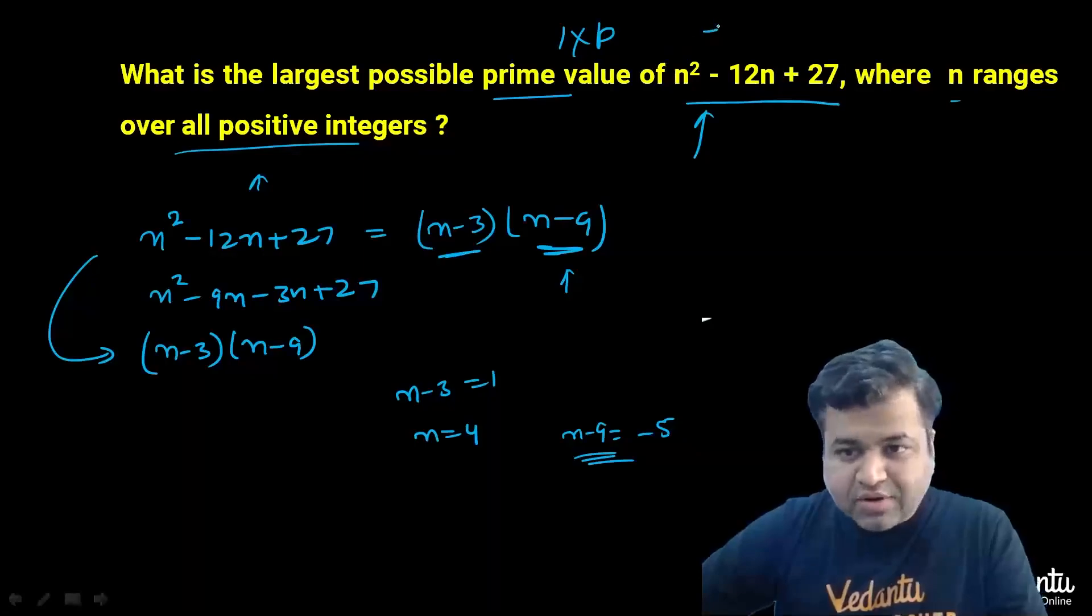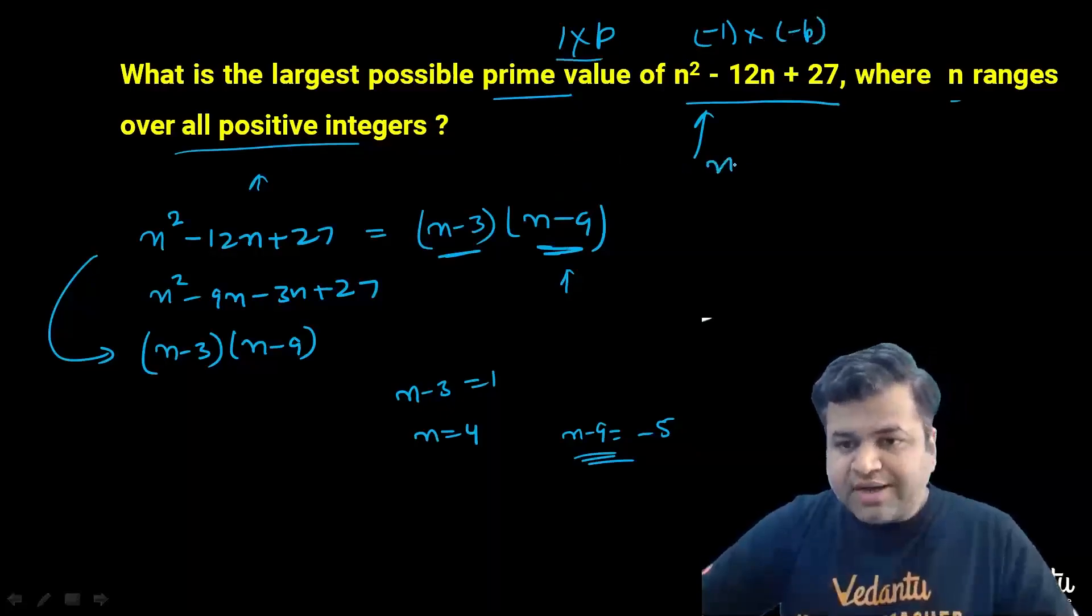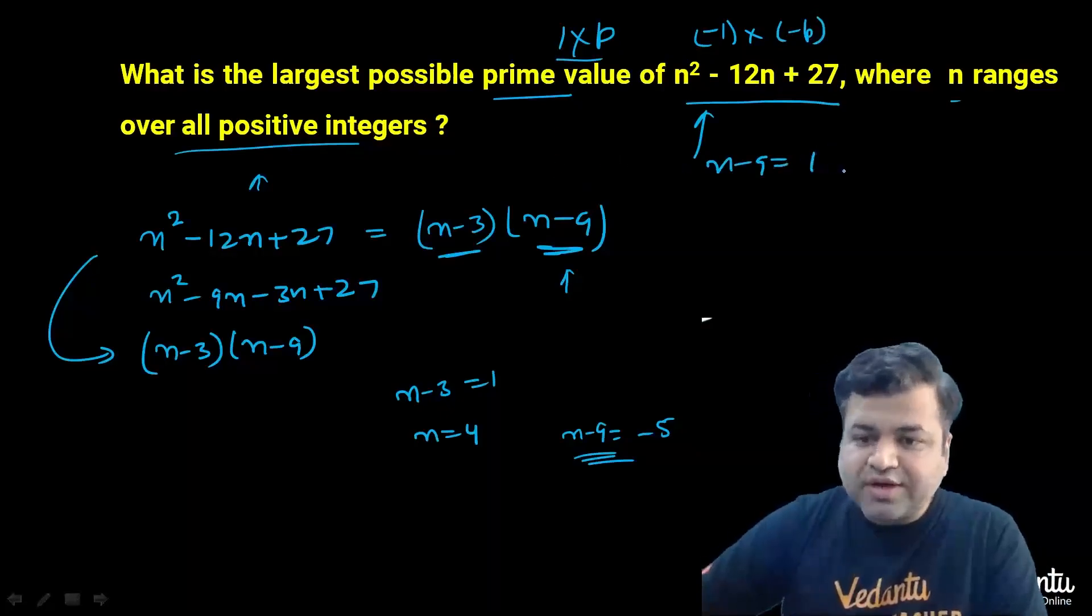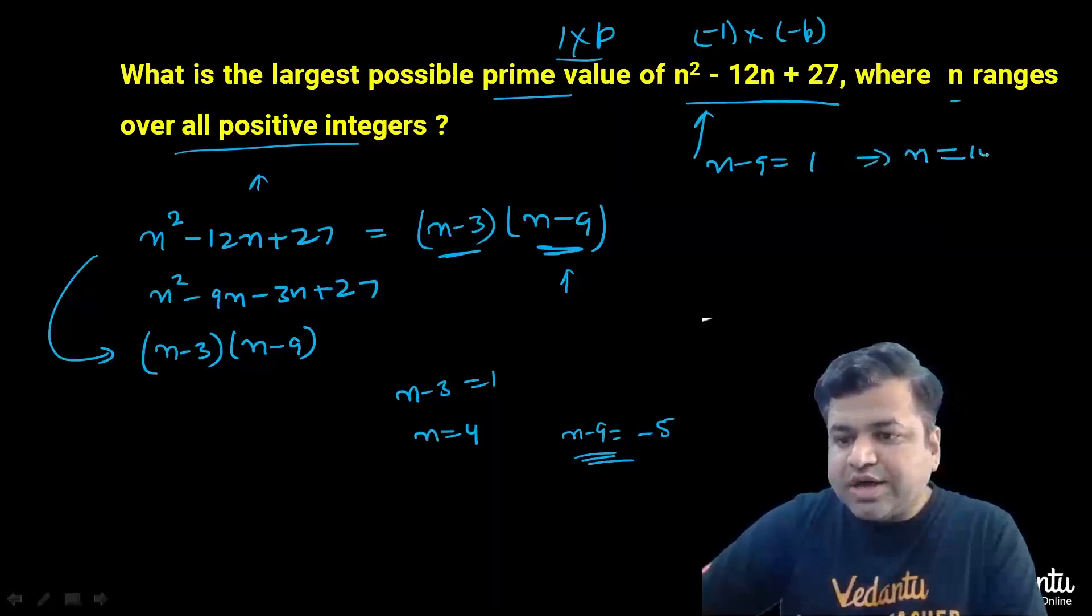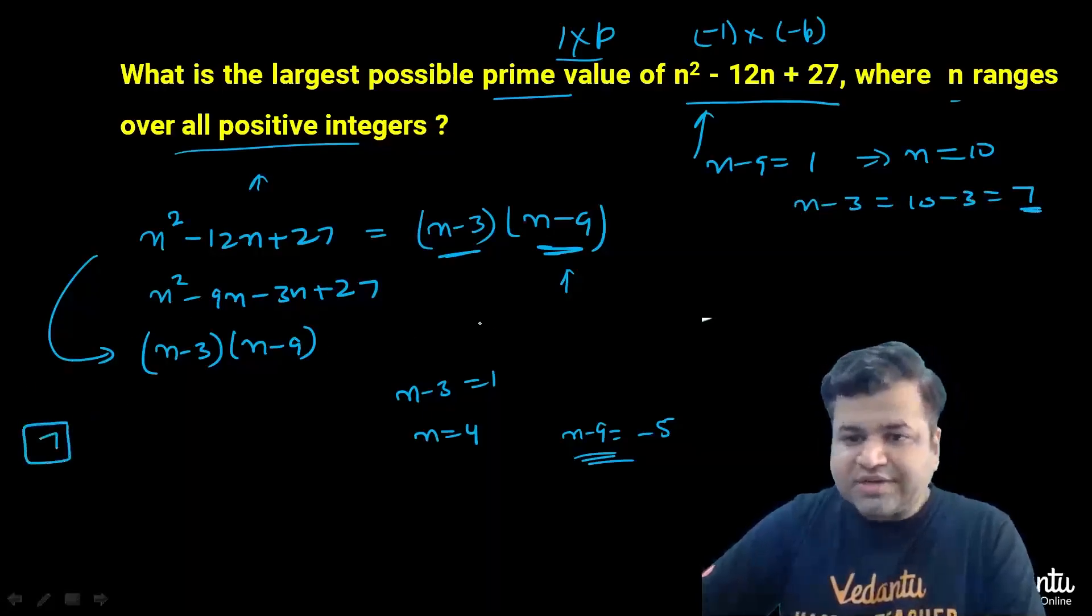One more thing, this can also be rewritten as (-1) times (-1). So let's consider first 1 into p. If n - 9 equals 1, that will imply n equals 10. In that scenario, n - 3 will become 10 - 3, that is equal to 7, which is a prime number. So one prime value we found is 7.